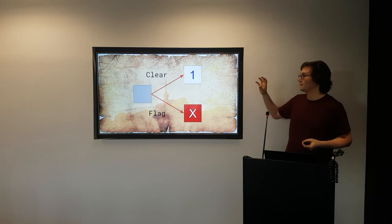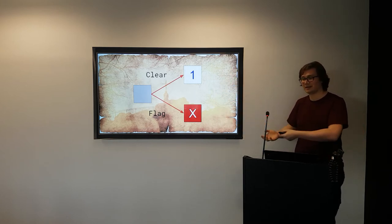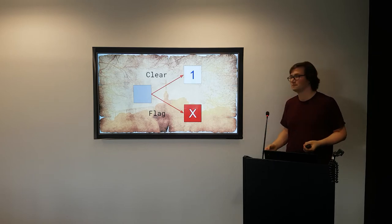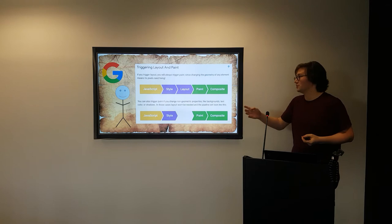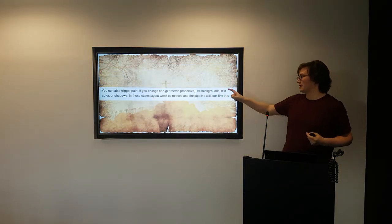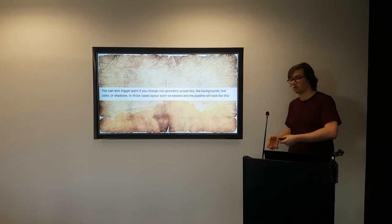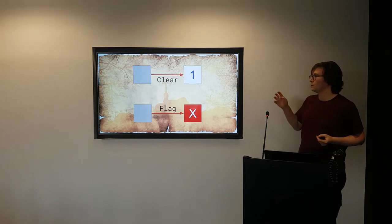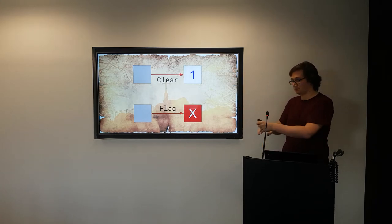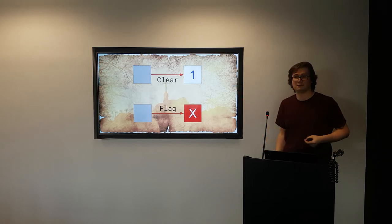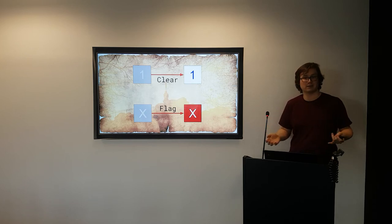That happens in Stevie's app whenever a cell goes from being unknown to being known — either clear or flagged — because we're adding text into that node. Adding the text means adding an HTML node, and the browser thinks, oh, this might have caused everything to move around. We know it hasn't because it's being overlaid on top, but the browser doesn't know that. Armed with his trusty friend Google, Stevie discovered that you can trigger paint if you change non-geometric properties like backgrounds, text colour, or shadows — but these don't cause a layout. When we statically generate the board at the start, we know what text is going to be in every cell. So instead of adding the text, we can display it in a transparent colour, and when the cell gets revealed, display it in an opaque colour so it becomes visible.